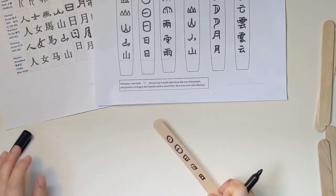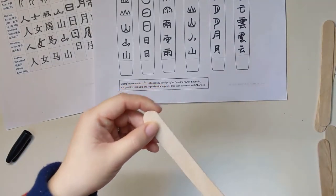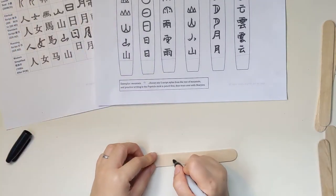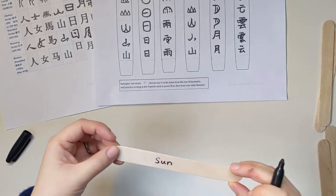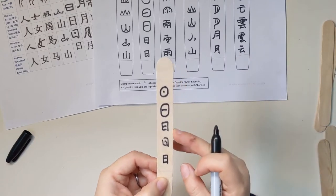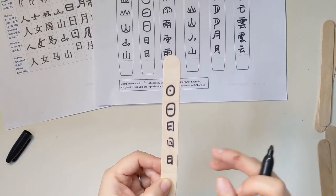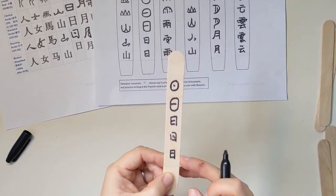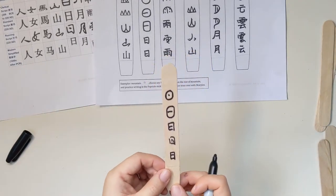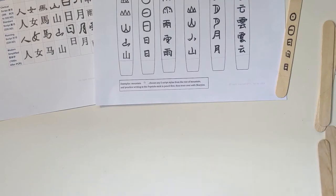And then on the back of the tongue depressor, you can write the translation, the English. So this is the Sun, this is the evolution of the Chinese character Sun from oracle bone to modern simplified. And then I can work on my second piece.